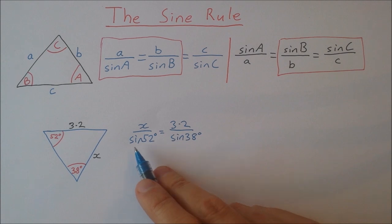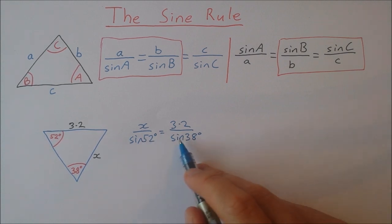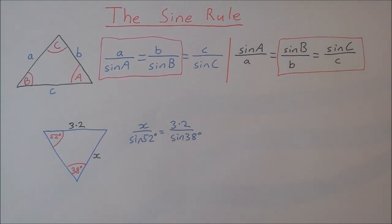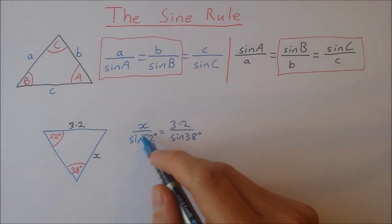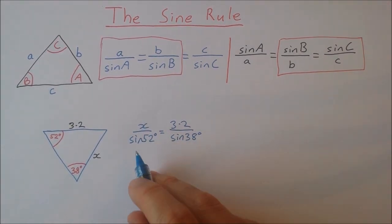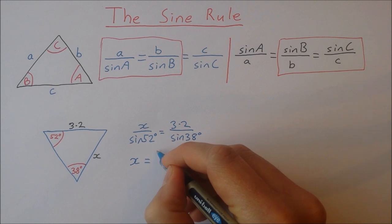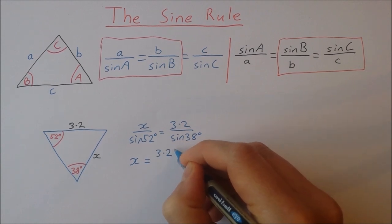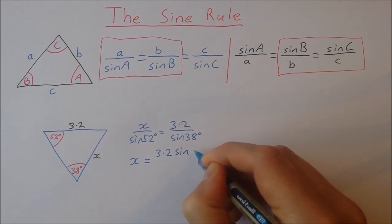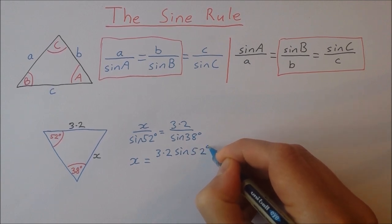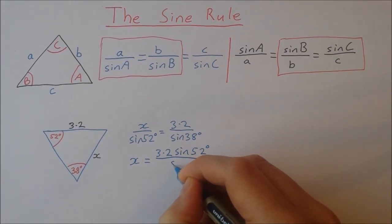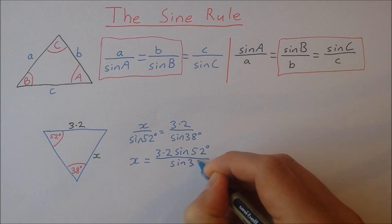Now a lot of people get their calculator out straight away and start calculating these sines right now but there's no point in doing that just yet. I'm going to use a little bit of algebra first to isolate x. So I'm just going to multiply both sides by sine 52. That will give me x equal to 3.2 sine 52 degrees divided by sine 38 degrees.